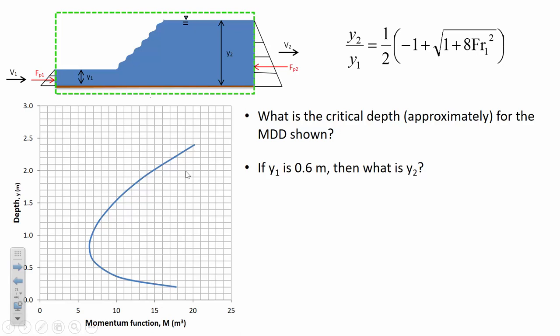How do we use the momentum-depth diagram to predict the conjugate depth? If we had a known upstream depth before the jump of 0.6 meters, we connect the momentum-depth diagram with a vertical line. The depth that has the same momentum looks like approximately 1.05. So that's a relatively small jump. The length of this line, going from 0.6 to 1.05, represents the elevation difference between upstream and downstream depth — that gives you the height of the jump.